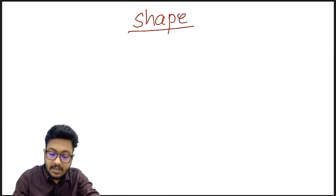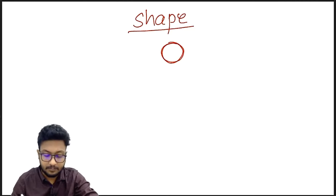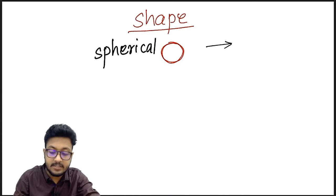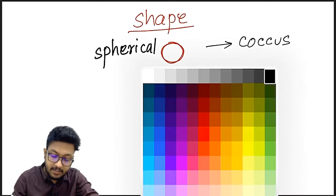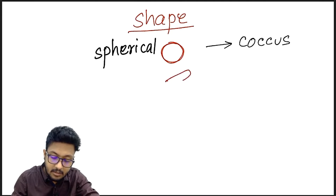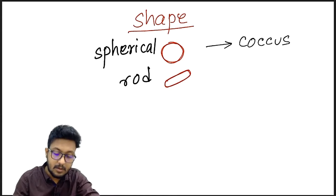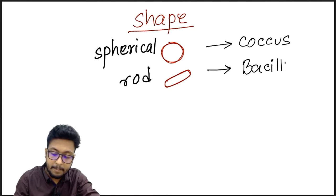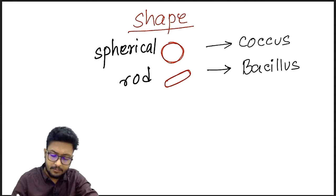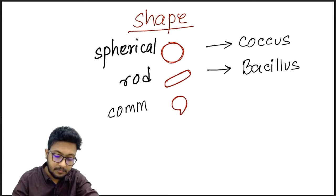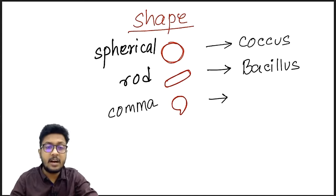If the shape of the bacteria is spherical, those bacteria are called coccus. If the shape is cylindrical or rod-shaped, the bacteria are named bacillus. Some bacteria have a deformed sphere shape resembling a comma — these are called comma-shaped or vibrio.